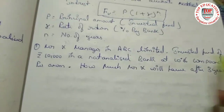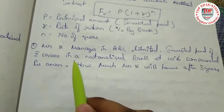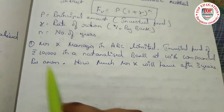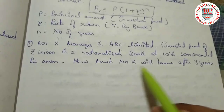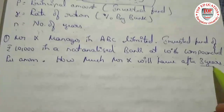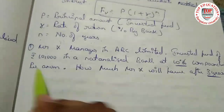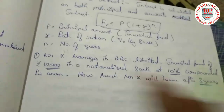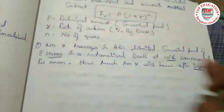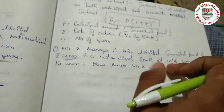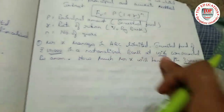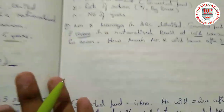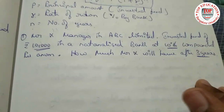Let's move to the sum. Mr. X, a manager in ABC Limited, invested a fund of rupees 10,000 in a national bank at 10 percent compounded per annum. How much will Mr. X have after three years? When you get the question paper, mark the values: 10 percent is rate of interest, 10,000 is principal amount, and three years is the time period.